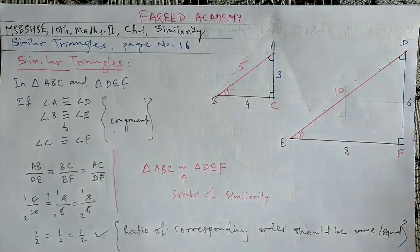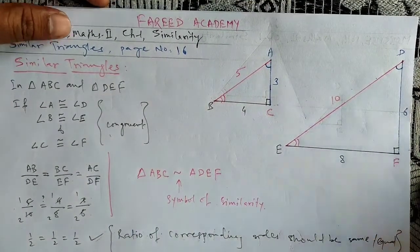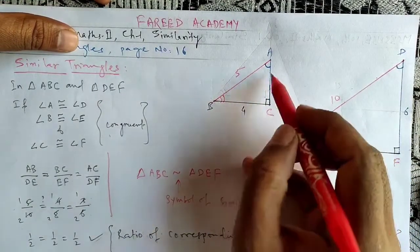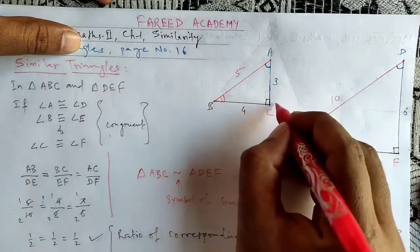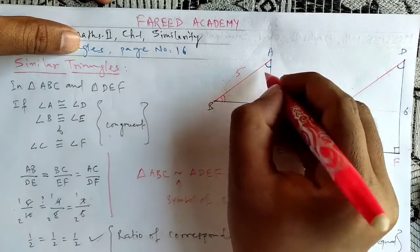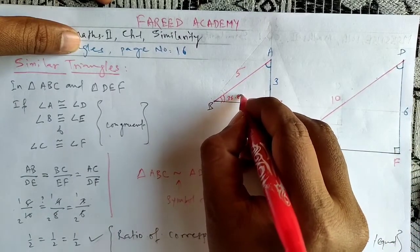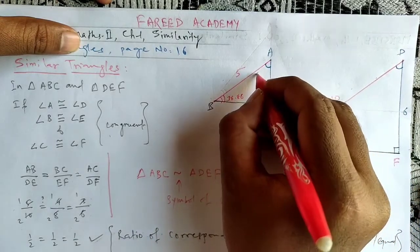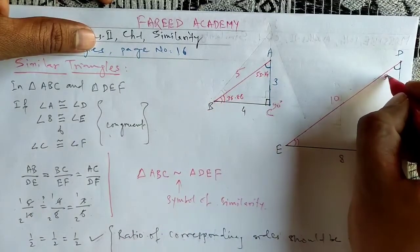This way we can say that two triangles are similar. Here in a practical example, a 3-4-5 triangle has a 90 degree angle, so this will be 36.86 degrees approximately and this will be 53.14 degrees.